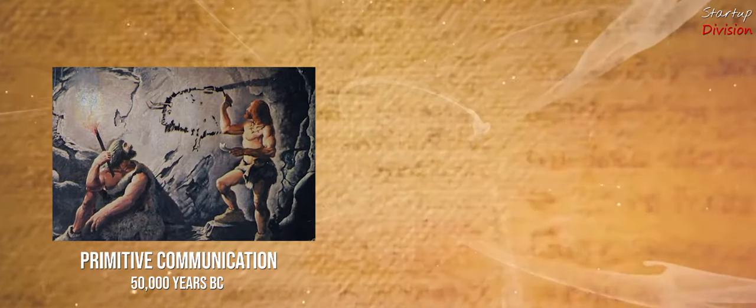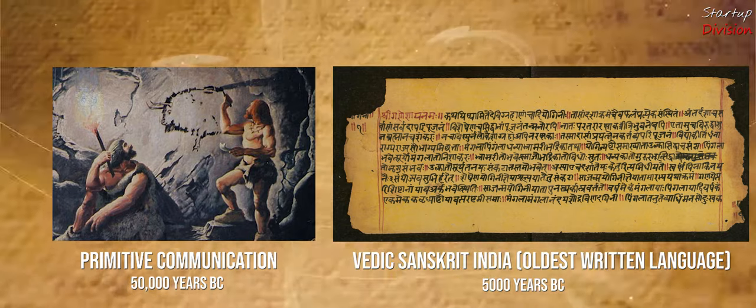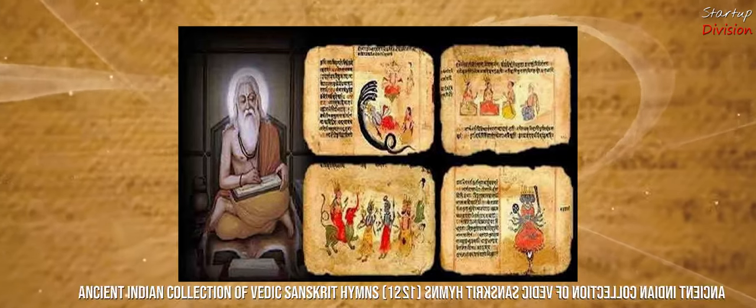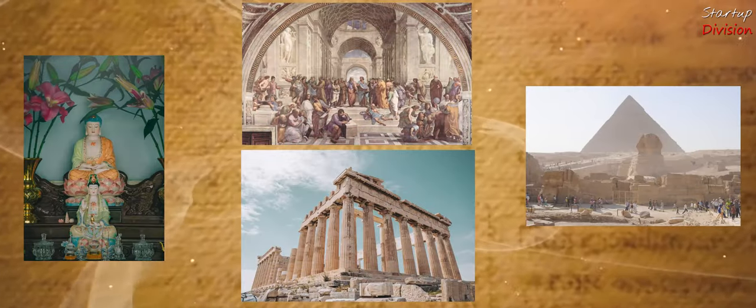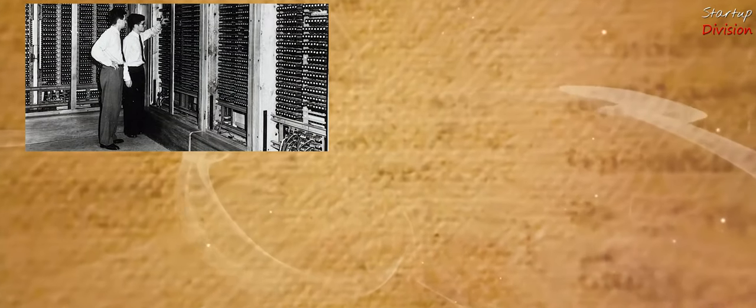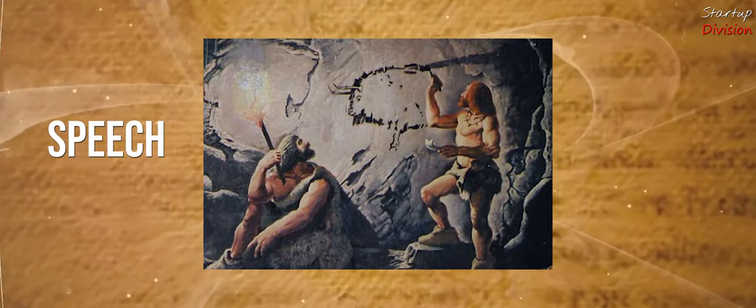50,000 years ago, our ancestors invented something called language. It was revolutionary. They were finally able to communicate and share ideas and knowledge and pass it down to the future generation. A lot of things have happened since then. Humanity progressed into the 21st century, making computers, atomic bombs, skyscrapers. But we are still using a 50,000 year old technology.